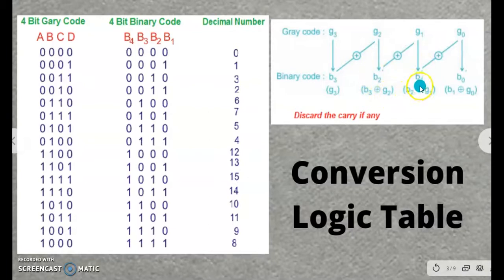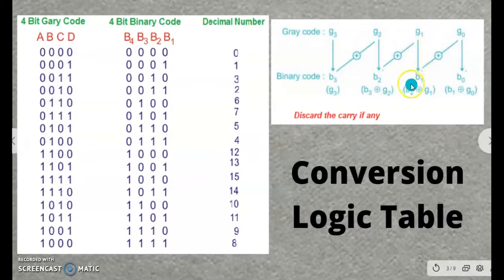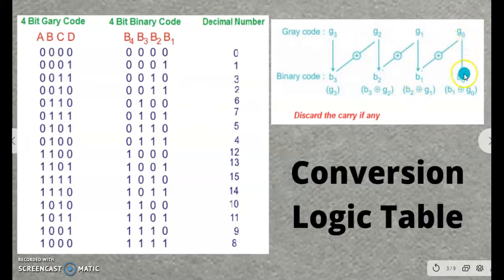To obtain the third binary bit, we add B2 with G1 — that is the second binary bit with the third gray bit. The sum is written into B1 bit of the binary code, and if any carry is generated, that will be discarded. To obtain the last binary bit, we add B1 with G0. The sum will be written to B0, and if any carry is generated, that will also be discarded. This way we can obtain the binary code from the given gray code.